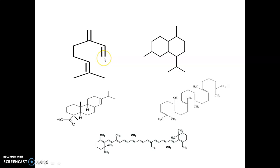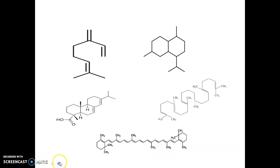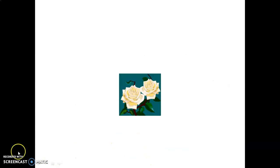Here you can see the structures of different terpenoids. This is myrcene — a monoterpenoid. This one is cadinene — a sesquiterpenoid. Diterpenoid: abietic acid. Triterpenoid: squalene, which is an acyclic triterpenoid. And this is beta-carotene, a tetraterpenoid. Thank you and happy learning.